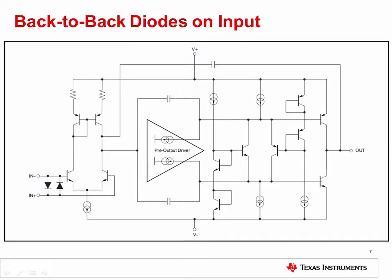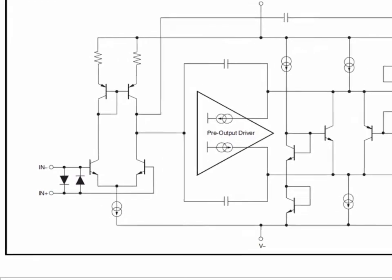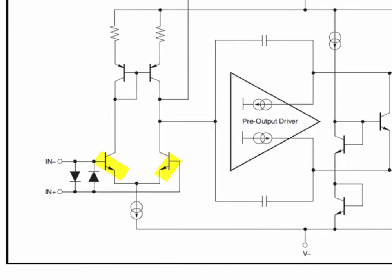Exceeding the maximum differential input voltage on amplifiers will also cause EOS damage. Some amplifiers allow the differential input voltage to be equal to the supply voltage. On the other hand, some amplifiers only allow for a relatively small differential input voltage, such as 0.7 volts. This small differential input is common in bipolar amplifiers, where the differential input pair is sensitive to a base to emitter breakdown, which can cause substantial damage to the device.